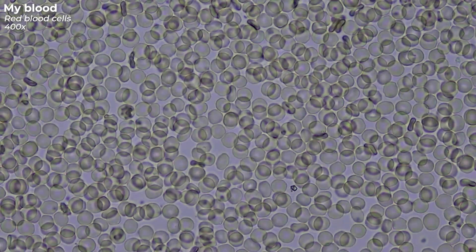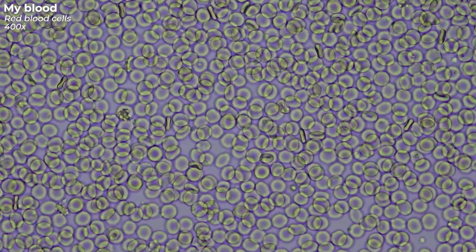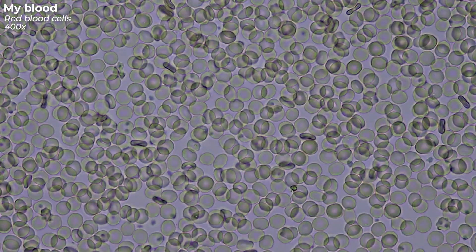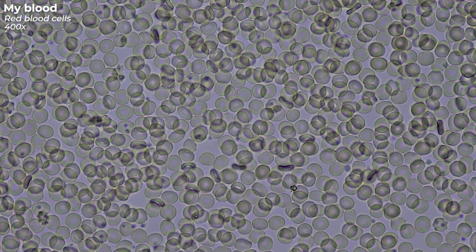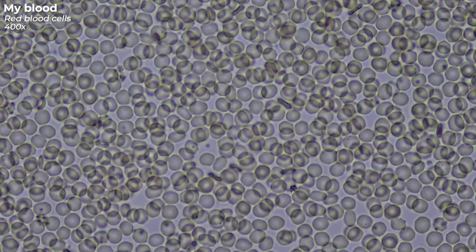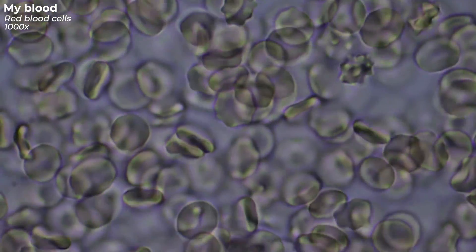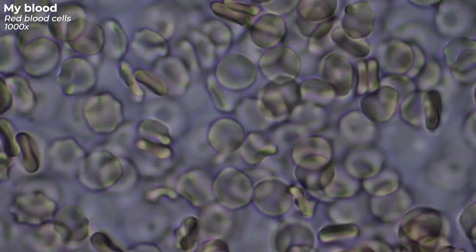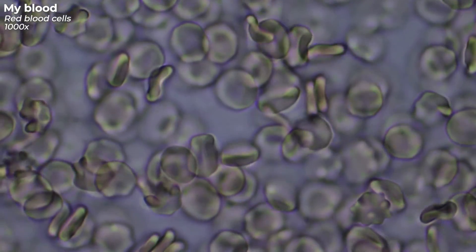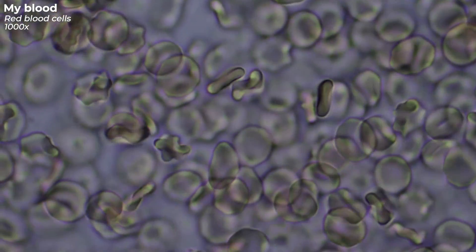Erythrocytes have a biconcave disc shape, so they appear slightly paler in the center than at the edge. The shape makes them flexible, allowing them to be deformable, so that they can enter and move through even the smallest blood vessels. Red blood cells are formed in the bone marrow and circulate through our body for an average of 120 days, until they get removed and replaced with new ones. Their main task is the transport of oxygen. The oxygen is bound to the iron-containing pigment hemoglobin, which makes up 90% of a red blood cell. They get oxygen from the lungs, supply your muscles and organs with it, and in return carry carbon dioxide back to the lungs, where you exhale it. This entire process is also called gas exchange.